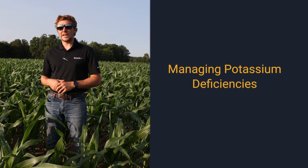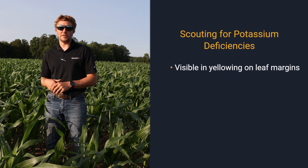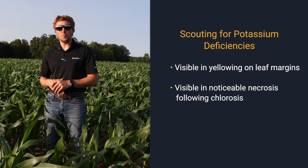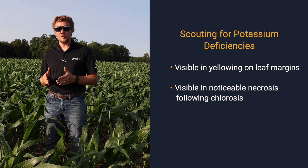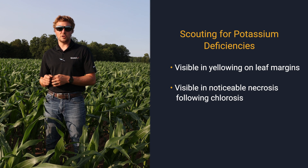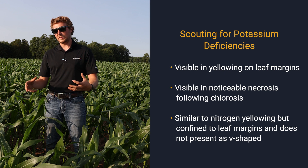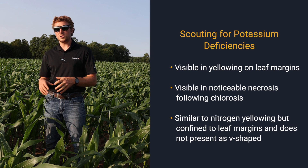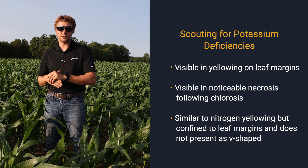One thing to look for when scouting for potassium deficiency in your crops is oftentimes you will see yellowing on the leaf margins and start to see some necrosis following that chlorosis. It's going to mimic nitrogen deficiency somewhat, except where nitrogen has that V coming inside from the leaf tip, the potassium deficiency is just going to be on the margins of the leaf and work its way inward. So they're almost completely reverse — the outside of the leaf is going to start to show that chlorosis and necrosis first.